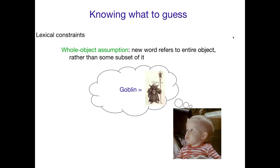So when you see 'goblin' and you see the thing the speaker is clearly talking about — or maybe you make a fast mapping and figure out the speaker is talking about this — you think the word refers to the entire object, not the head, the stick, the feet, the fact that it's small. It's just the whole object. That's the whole object assumption, and children start with that as a basic idea for what the meaning of a word is.